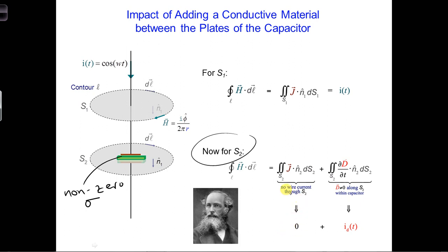This would mean that we have a conduction current between the plates. So here, there's no wire through S2, but we do have a conductive material, so this is no longer zero. We're going to have some sort of conduction current here.